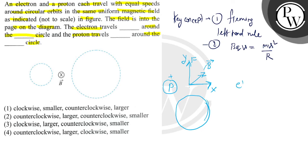Now let's see what is the radius of this circular path. For this we will apply key concept number 2. So from here BQV is equal to MV square by R, so R is equal to MV divided by BQ. From here we can say R is directly proportional to mass.